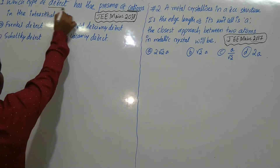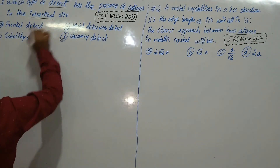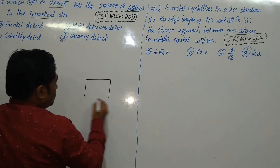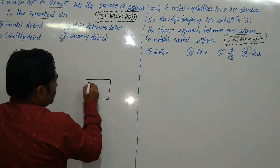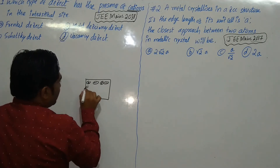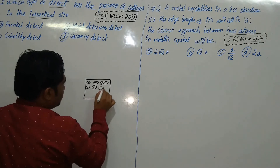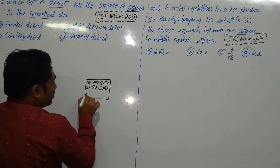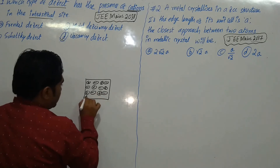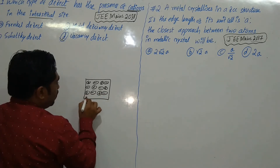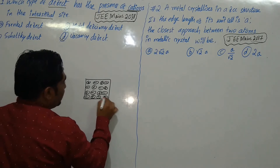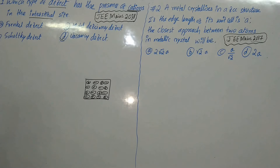Let us see in which defect the cation is present at the interstitial site. In an ionic crystal, the arrangement is: cation, anion, cation, anion — alternating. Anions are surrounded by cations and cations are surrounded by anions; negatively charged particles are surrounded by positively charged particles and vice versa.